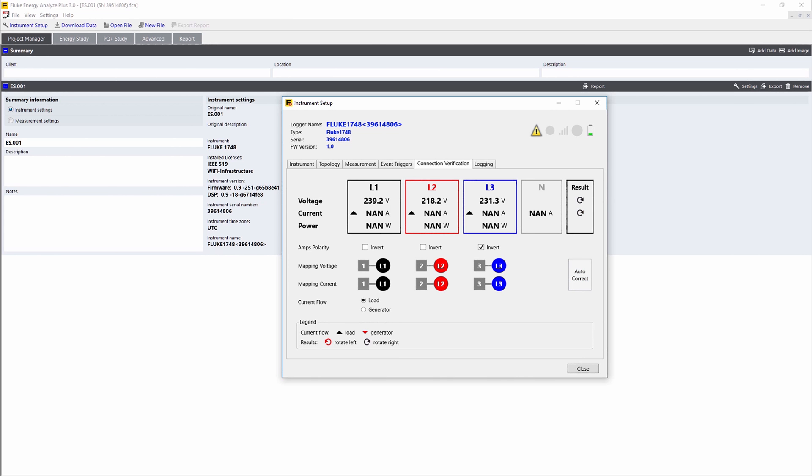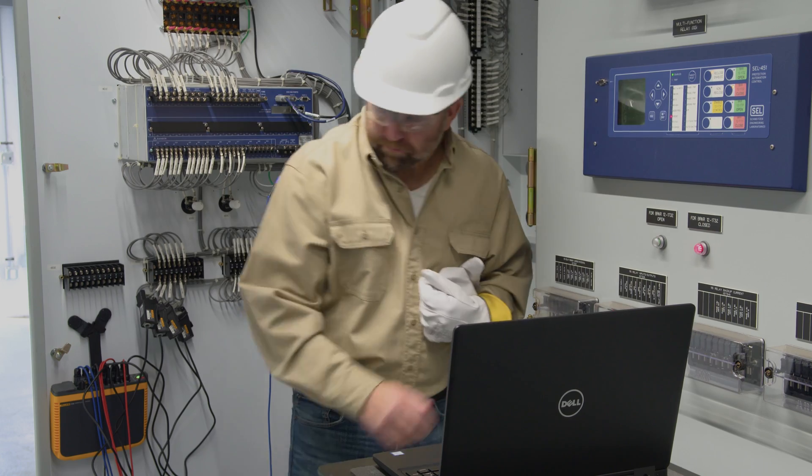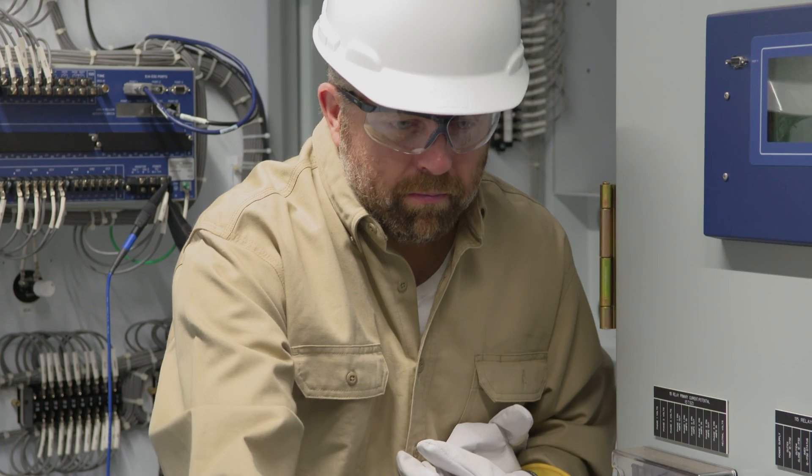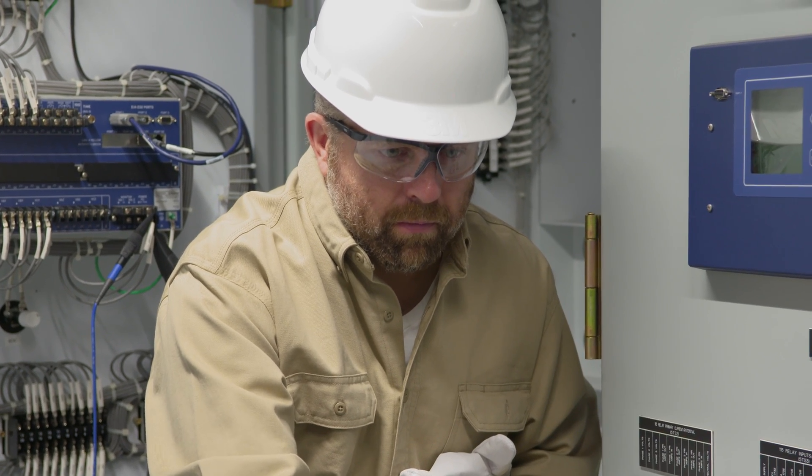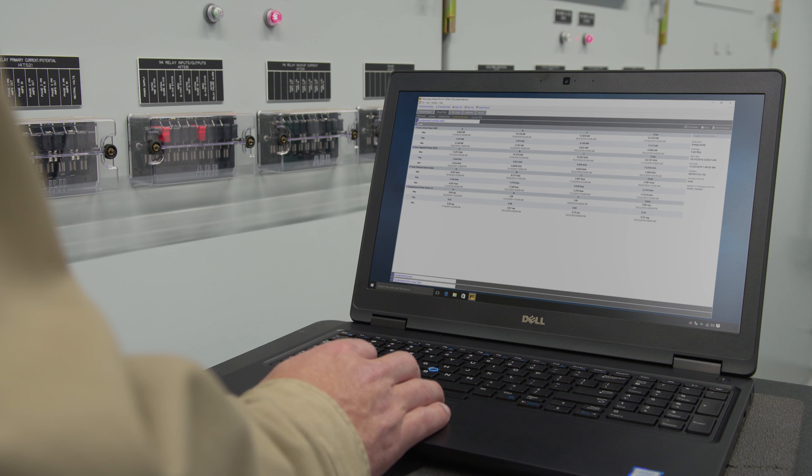Once the connections are corrected, the power button on the unit will turn from amber to green. You can even minimize your time in potentially hazardous environments and reduce the hassle of suiting up in PPE by using a Wi-Fi connection to connect to Energy Analyze Plus to view data directly in the field.